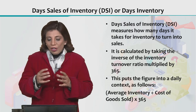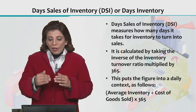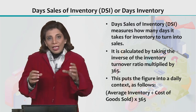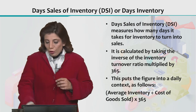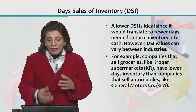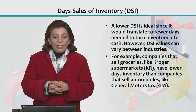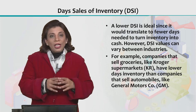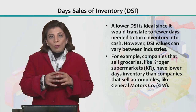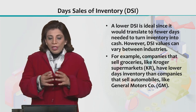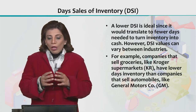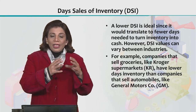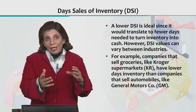To calculate DSI, you take the average inventory, divide it by the cost of goods sold, and multiply by 365. This gives you the days sales of inventory value. A lower DSI value tells you that the company is working very efficiently.